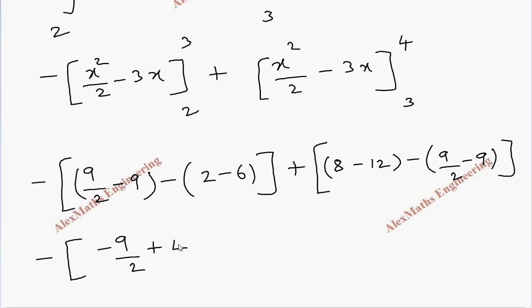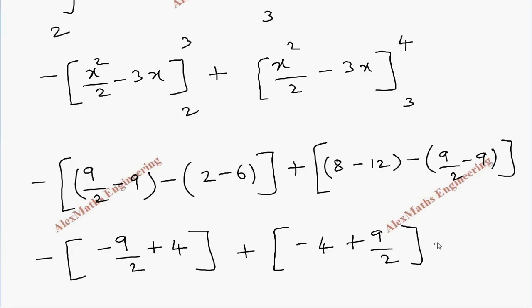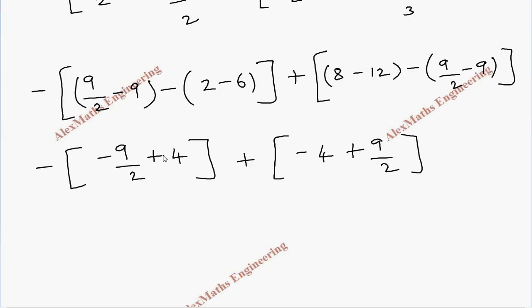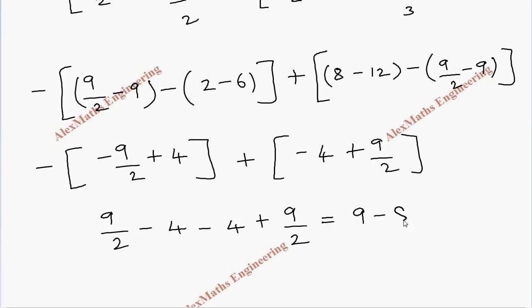Taking the minus inside the first part gives 9 by 2 minus 4, and the second part is minus 4 plus 9 by 2. Combining: 9 by 2 plus 9 by 2 equals 9, and minus 4 minus 4 equals minus 8, so totally I2 equals 9 minus 8, which is 1.